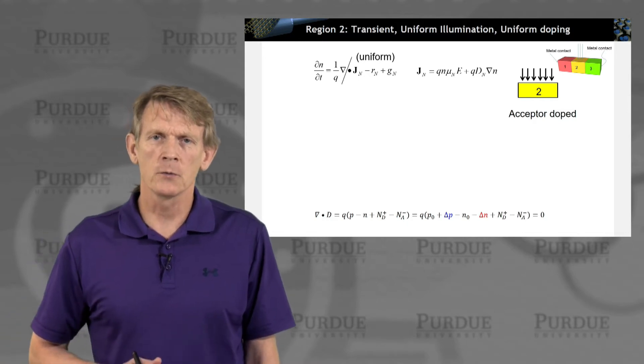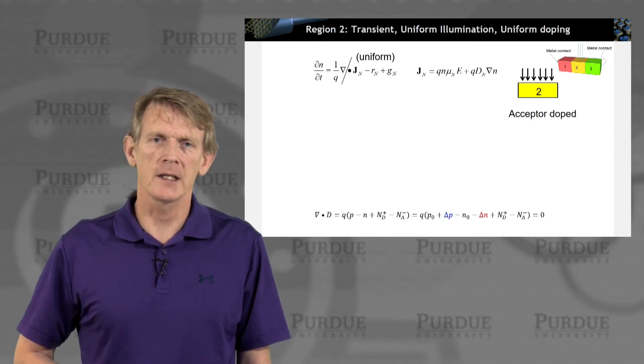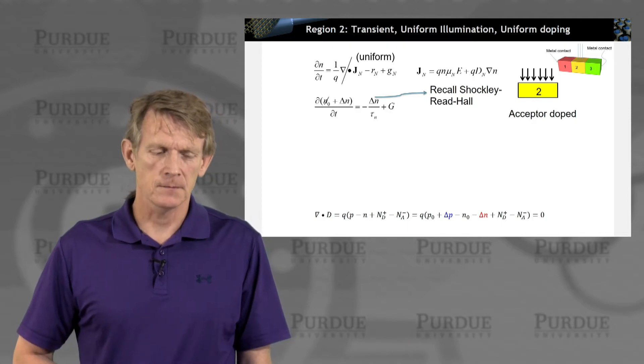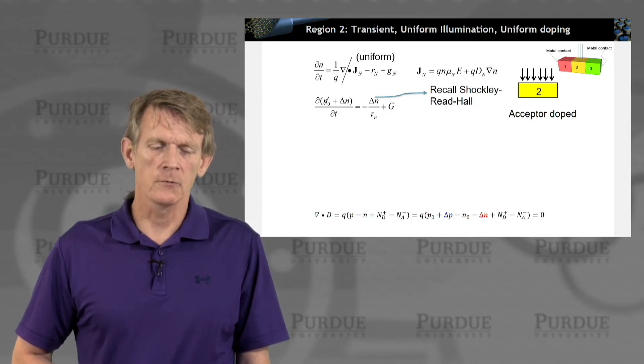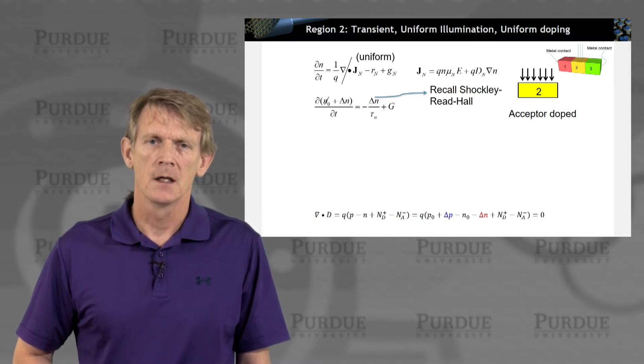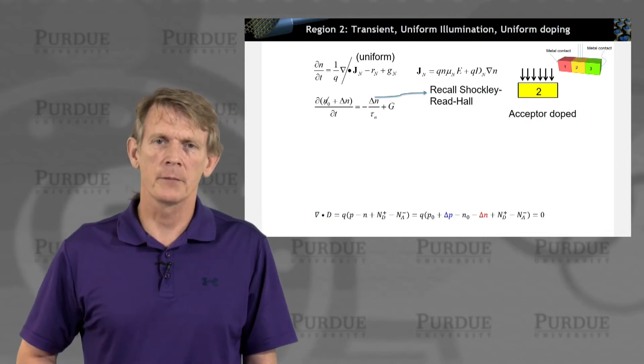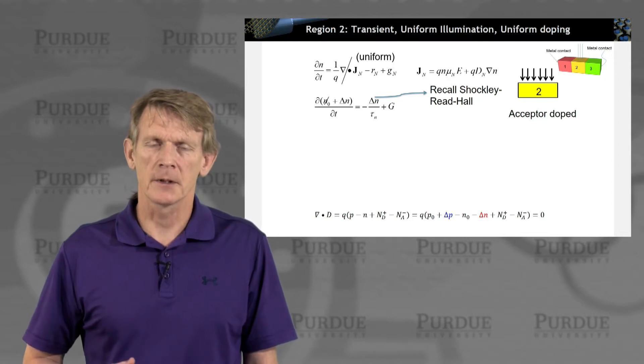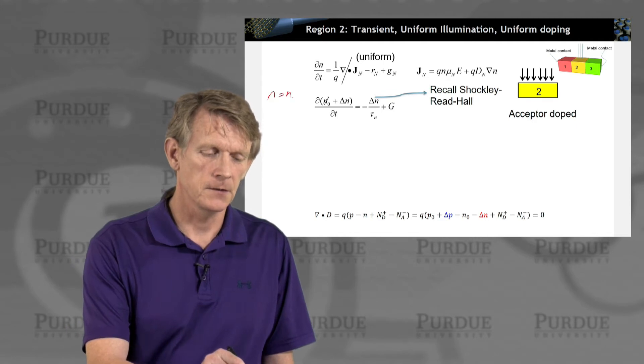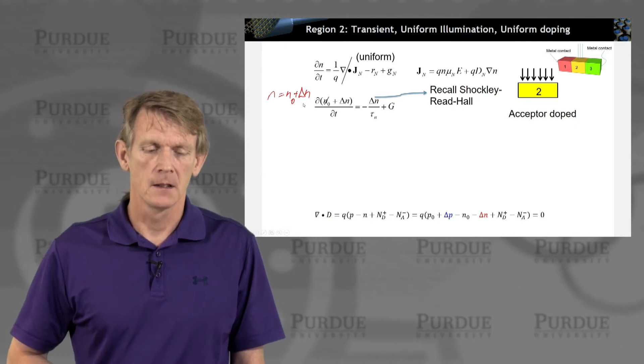So we are assuming that the illumination is uniform, and we assume that there is no spatial gradient on the current density. If that's the case, we can write down the differential of the electron density as a function of time. We know that N0 here is small compared to the excitation, and we're typically neglecting it. And we wrote down N is N0, the equilibrium, and some of the excited N.